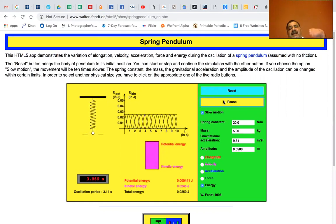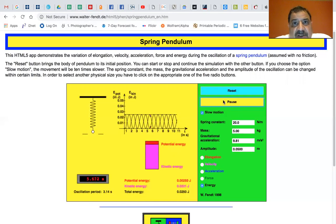Once it passes that, it starts going to spring potential energy because it's elongating the spring, which will pull it back up. Notice that the rectangle representing total energy never changes. It never changes in size—it only changes between kinetic energy and potential energy.